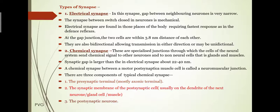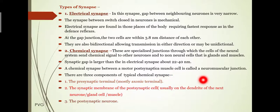There are three main components of a typical chemical synapse: the first is the pre-synaptic terminal, the second is the synaptic cleft — generally in the dendrites — and the third is the post-synaptic terminal.